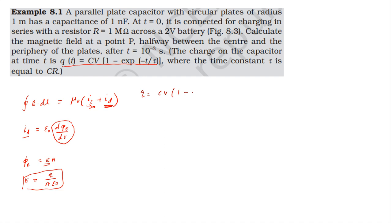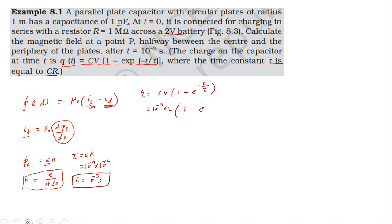The charge q equals C into V into 1 minus e power minus t by tau. Here C is 10 power minus 9 farads, V is 2 volts. The time constant tau equals C into R, which is capacitance 10 power minus 9 multiplied by resistance 1 megaohm (10 power plus 6 ohm), giving tau equal to 10 power minus 3 second.